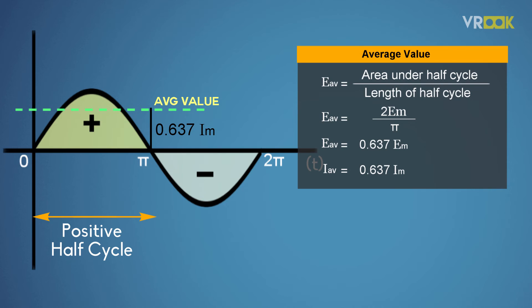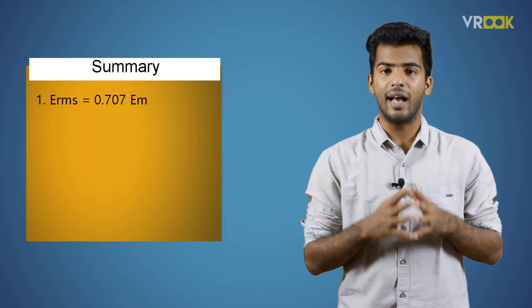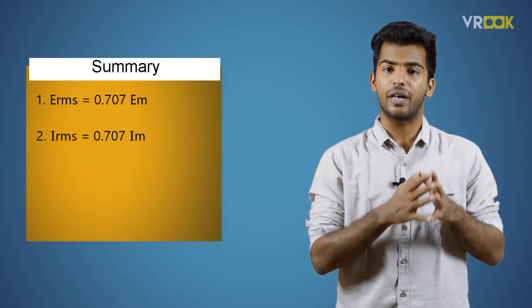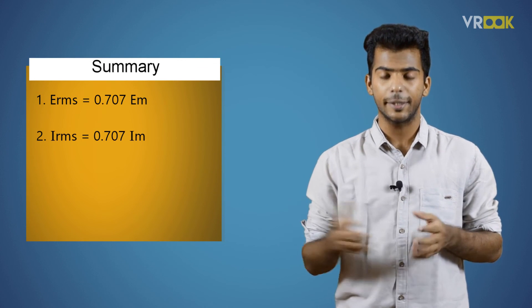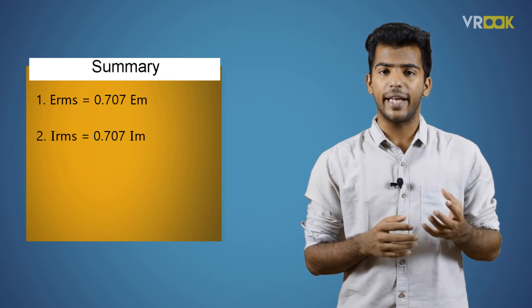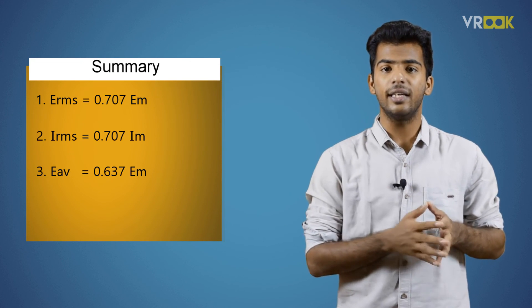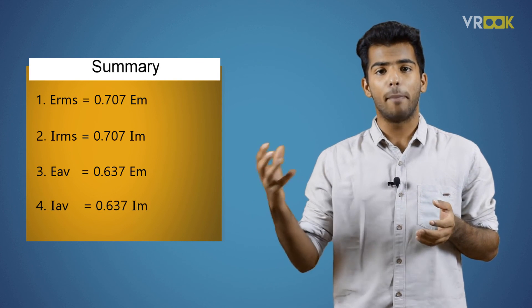These are the two important values of alternating quantities. To sum up, we have RMS value of alternating voltage as 0.707 times max voltage and RMS value of current as 0.707 times maximum value of current. And then the average value of voltage EAV is 0.637 times maximum voltage, and finally the average value of current will be 0.637 times maximum value of current. That's all about the different values of alternating quantities.